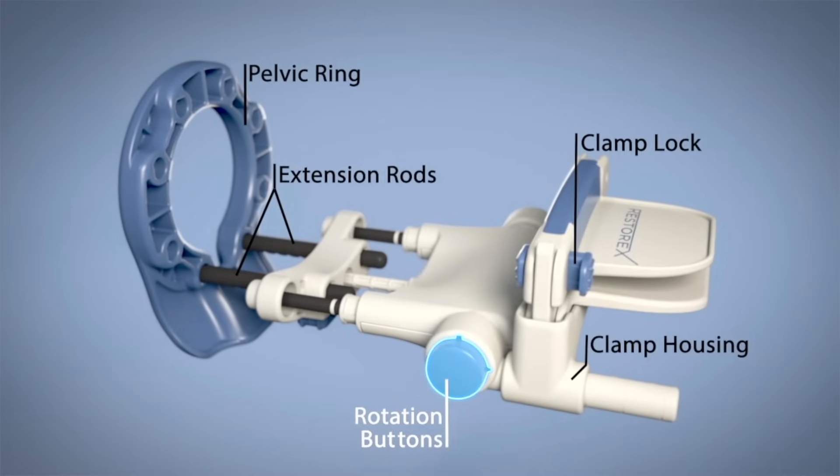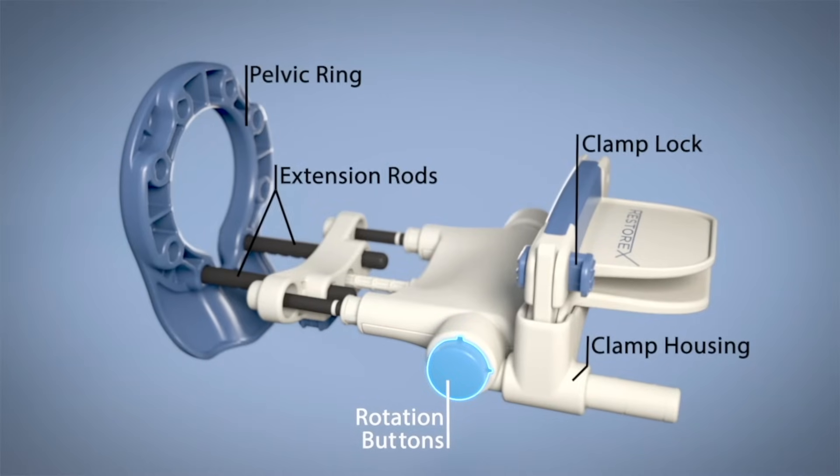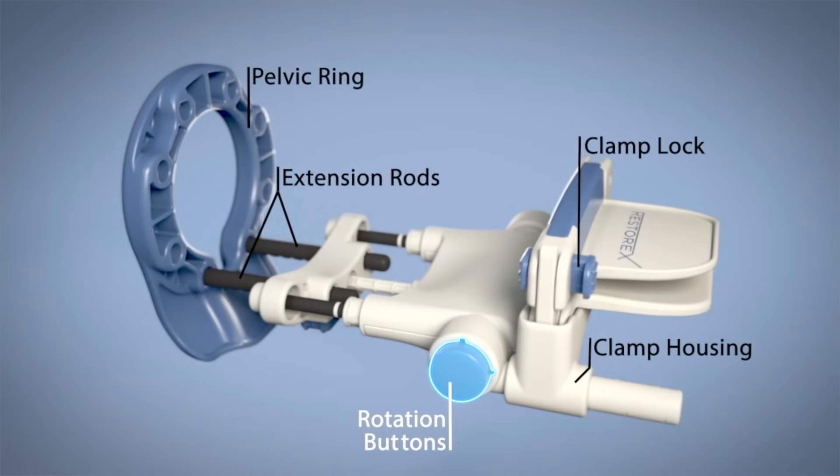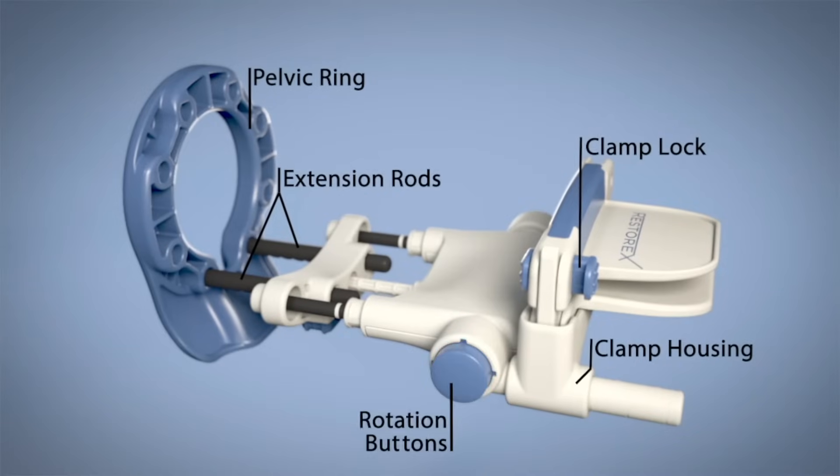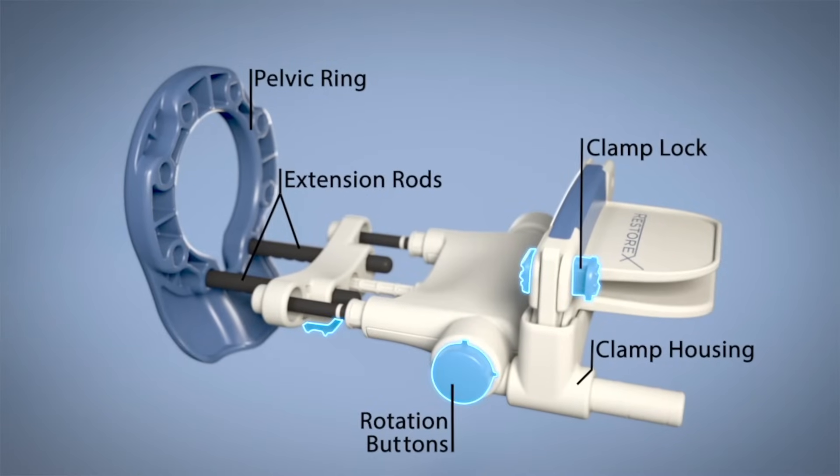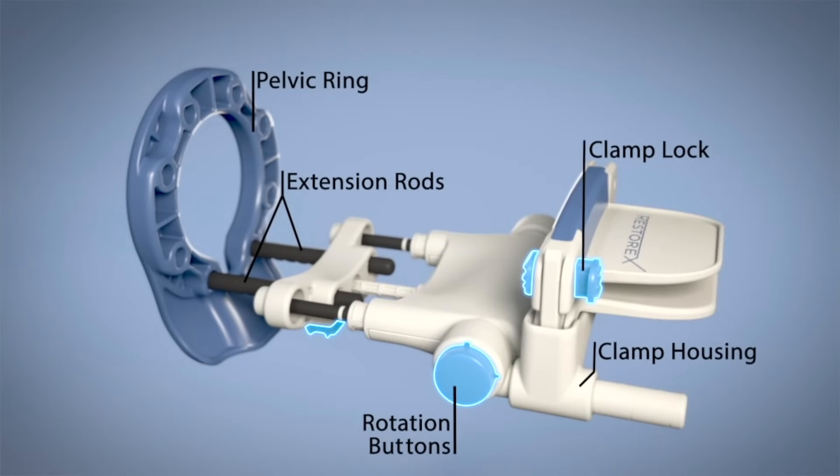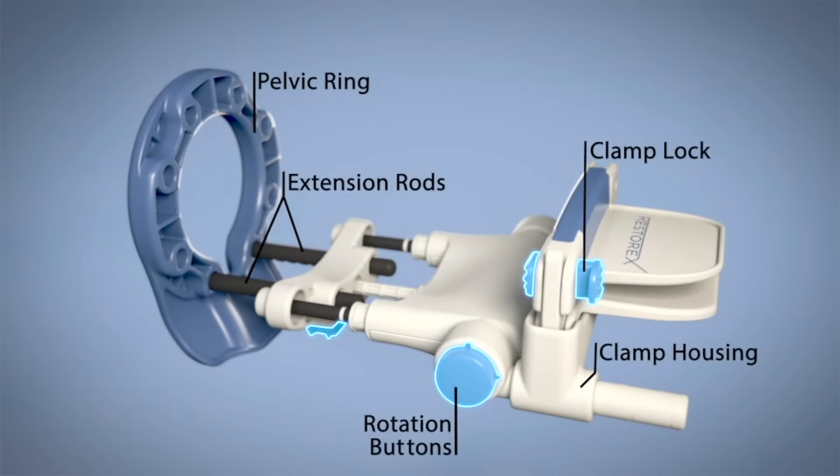The rotation buttons located on either side of the device are pushed simultaneously to rotate Restorex, providing opposite angular force to correct the curvature. The functional buttons are colored blue and are used to secure the clamp, release the extension rods, or rotate Restorex for opposite angular force.